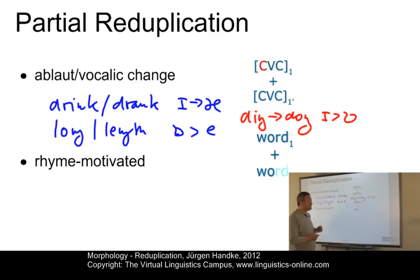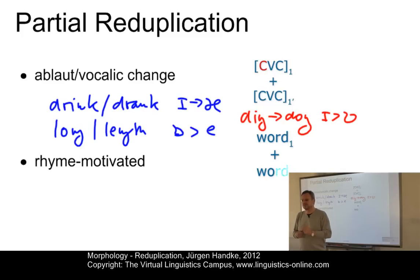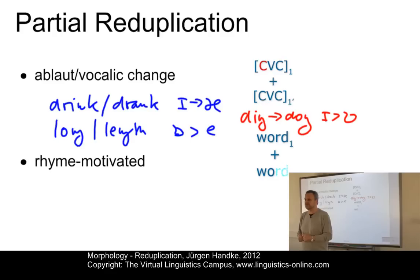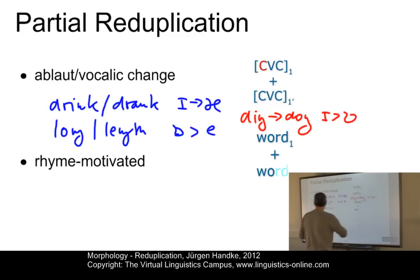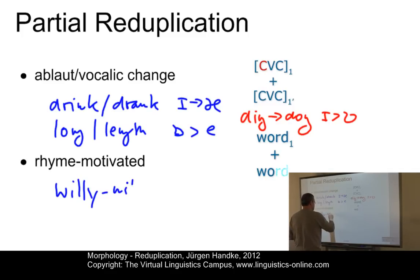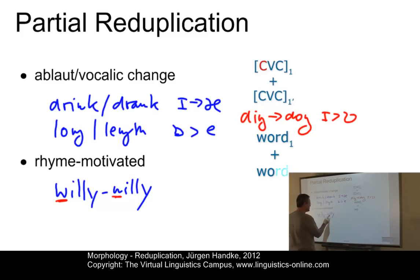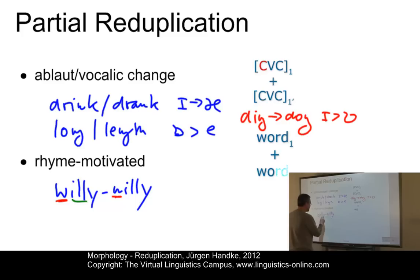In rhyme-motivated examples of reduplication, the onset consonant changes while the rest of the base form is repeated. The vowels are maintained. Our example was willy-nilly, where we have a change of the onset consonant, and the rest remains as it was.